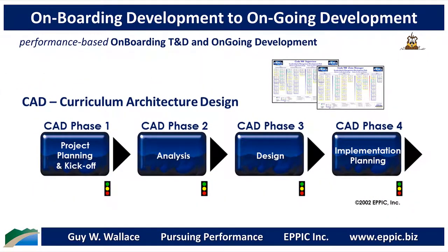A training and development path that is created as a result of the design phase then leads to a prioritization phase, where executives and leaders of the enterprise determine what the priorities are given the gaps that exist. The development of a path, or paths, enables leadership to visually see what training